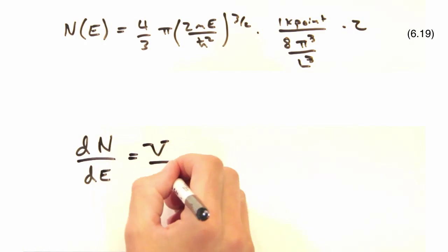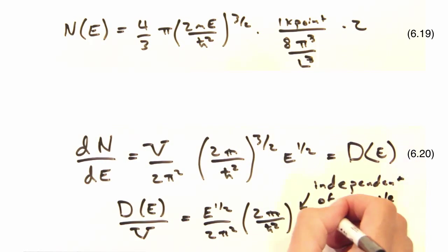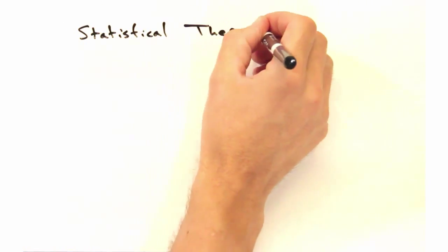And after taking the derivative, we get our density of states normalized to sample volume.